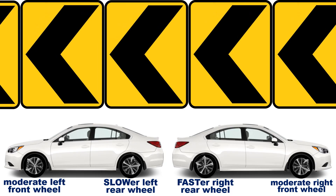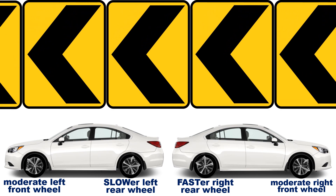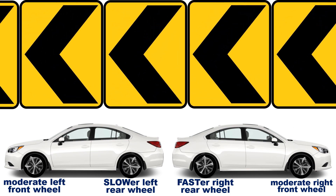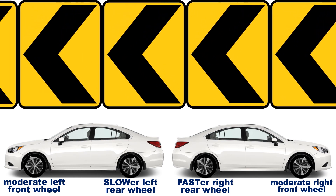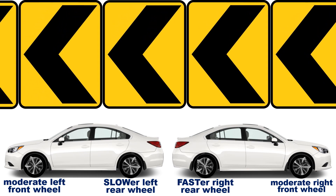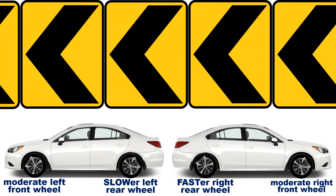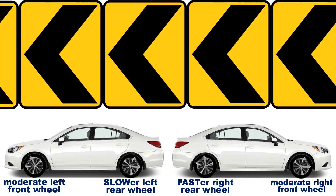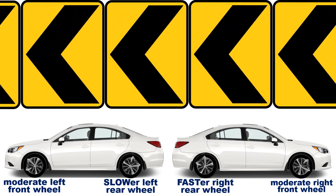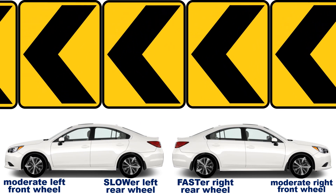When the car turns left, the right rear wheel spins faster than the left rear wheel because the right side is the outer one and the left side is the inner one. Both front wheels spin at the same speed because their traveling distances are equal.